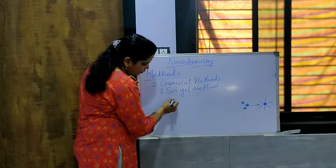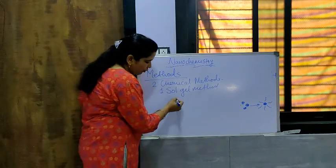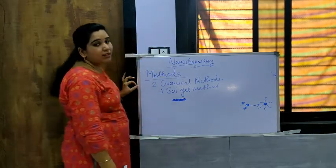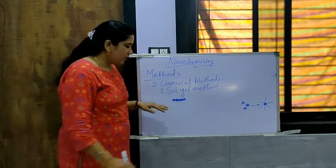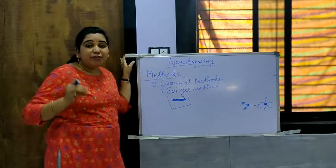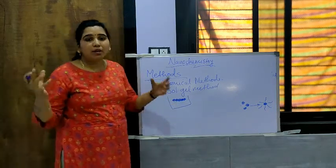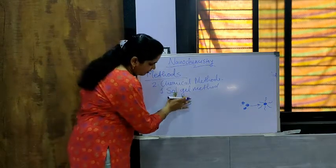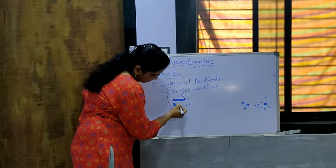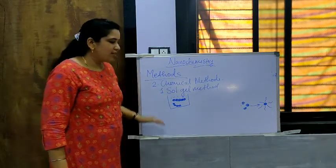In the sol-gel method, sols are those substances which are found in the liquid state. Whenever a material is first prepared in a liquid, it is called a sol. When a number of such particles are connected with each other in a linear connected chain form, that is called a gel. So sols are liquid-filled particles; they are prepared first, and then when a number of sols connect with each other in a particular solution, it is called a gel.